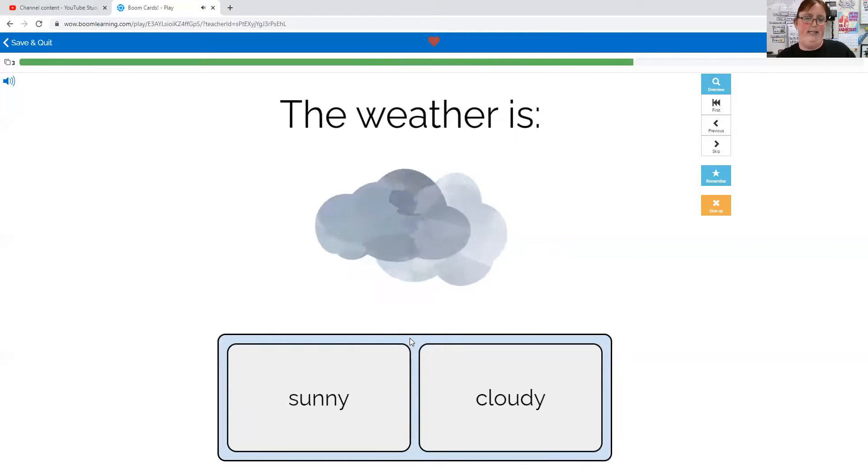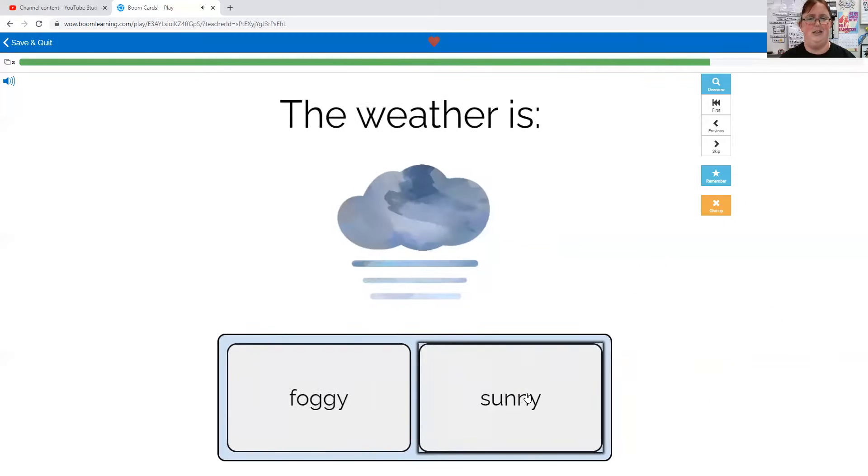The weather is sunny or cloudy. Do you see the sun? No, it's cloudy. The weather is foggy or sunny. I don't see the sun. I think these lines are supposed to be fog, so it's foggy.